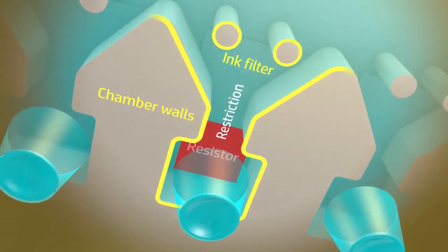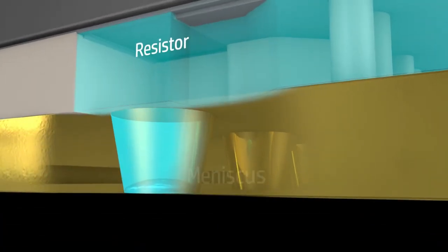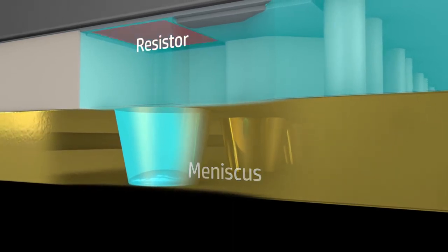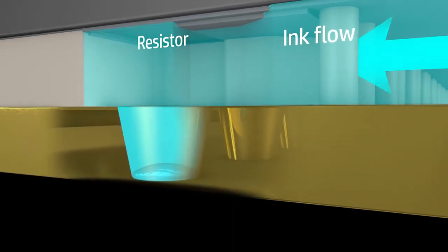Two pillars prevent particles from clogging the chamber and nozzle. The nozzle is filled with ink, and the meniscus is the surface where the ink meets the air. A human hair is thicker than the chamber and nozzle together.